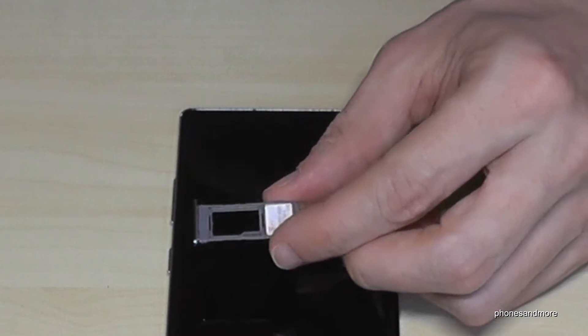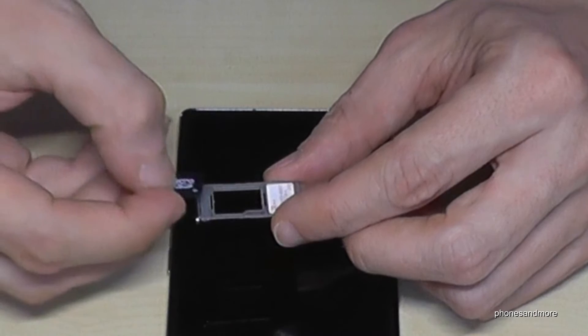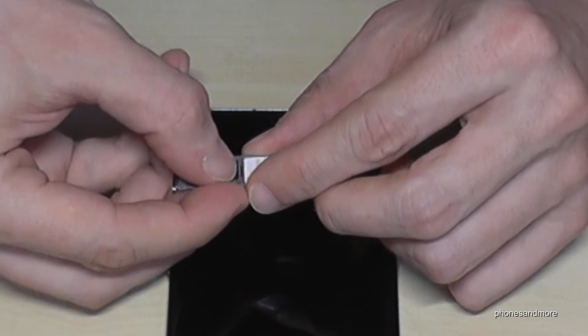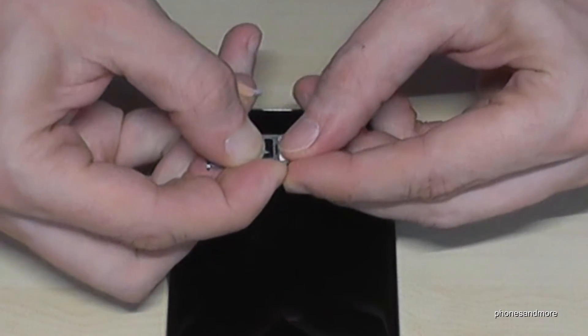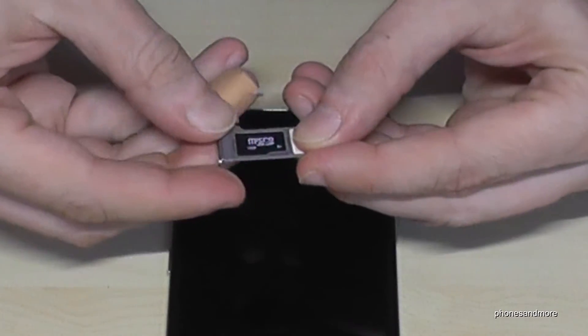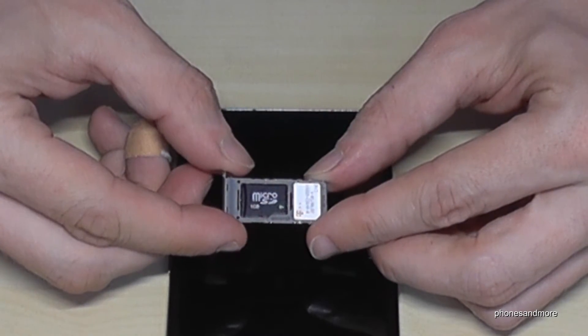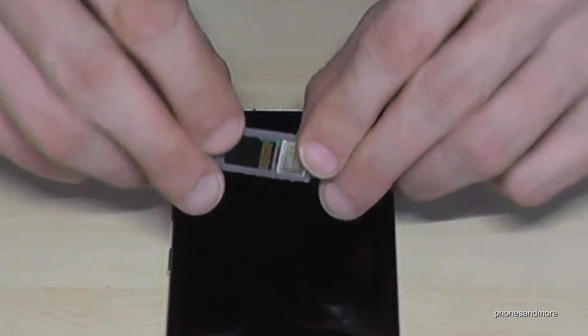Okay, if you want, you can also add a micro SD card here on the back. Fix it well; it has to look like this, and the contacts are also below.